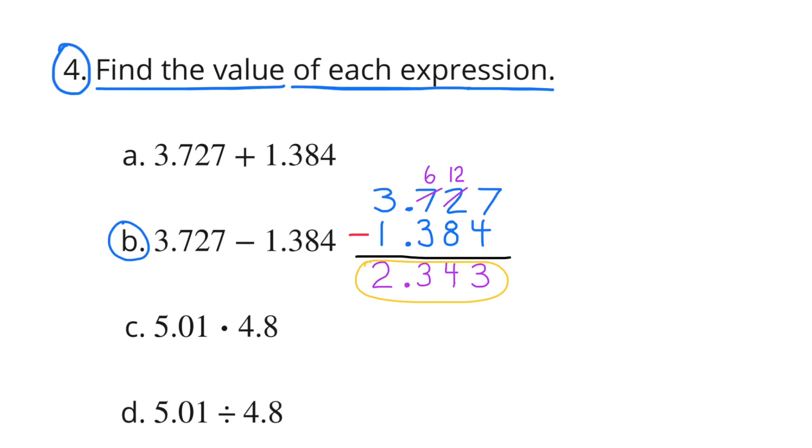B. 3 and 727 thousandths minus 1 and 384 thousandths. The difference is 2 and 343 thousandths.